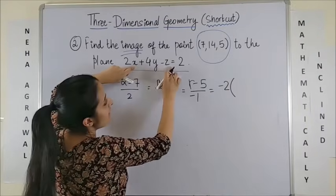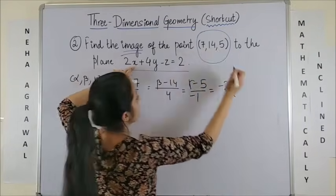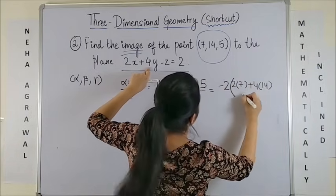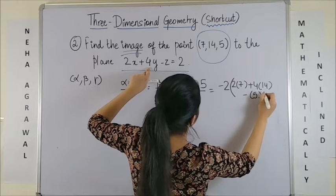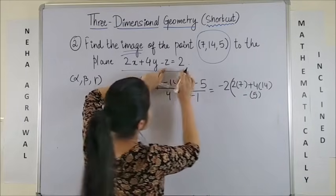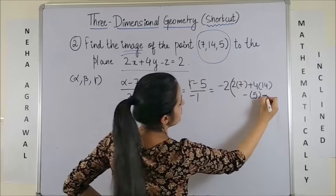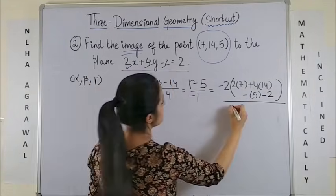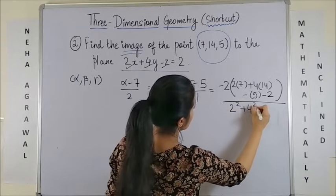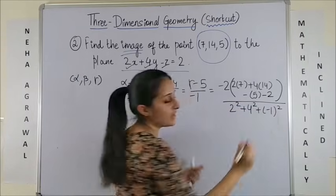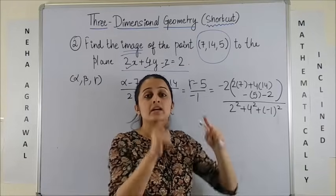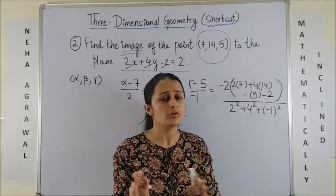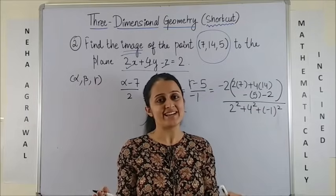Wherever you see x, y, z, just substitute these values. So this will be 2 into 7 plus 4 into 14 minus 5. Don't forget to bring in the constant, which is minus 2, all over the square of the coefficients: 2 squared plus 4 squared plus (minus 1) squared. To show you the procedure it is taking long, but trust me, when you do it on your own it doesn't take more than 10 seconds.